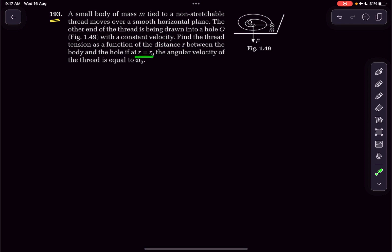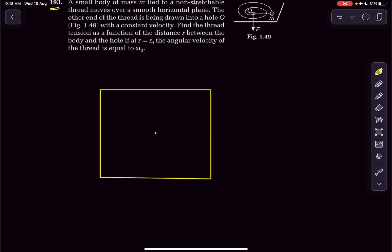If I try to draw the top view of the situation, this would be the hole O. At any general moment the mass m is at a radial distance of r and makes an angle theta with this horizontal line.